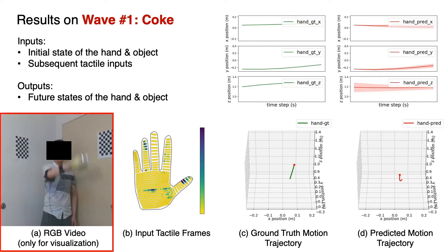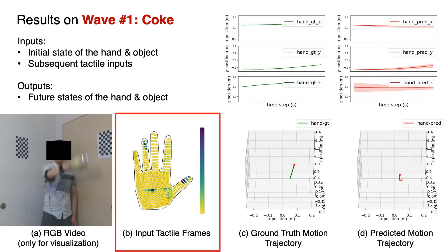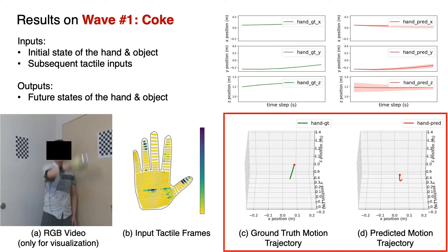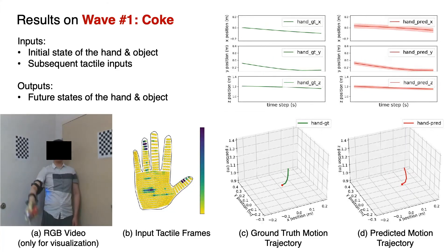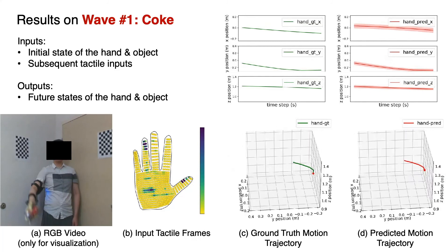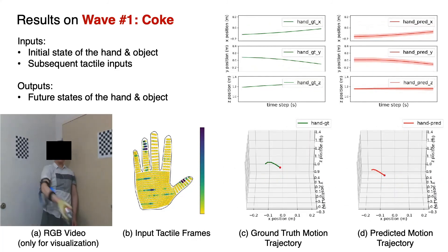On the left, we first show the RGB video, which is only used here for visualization, and then the tactile frame. On the right, we show the side-by-side comparison between the ground truth and the predicted motion trajectories in 3D. On the top, we show the comparison in each of the three axes, where the shaded area in our prediction indicates the 10% and 90% quantiles to represent the estimated uncertainty. As can be seen from the video, our model's prediction closely resembles the ground truth.